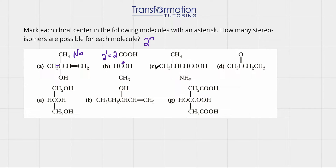Now let's go to molecule C. Are there any carbons that have four different groups? This carbon has a methyl and a methyl, so it cannot be a chiral center because it's connected to two of the same groups. These other carbons are not chiral either because they each have three hydrogens. Remember, if a carbon has two or three hydrogens, it automatically cannot be a chiral center because it won't be able to have four different groups.